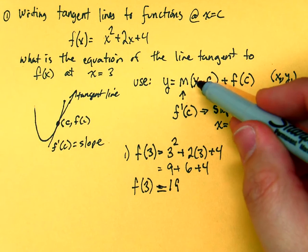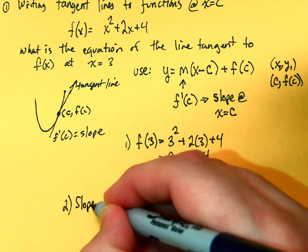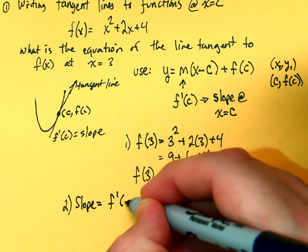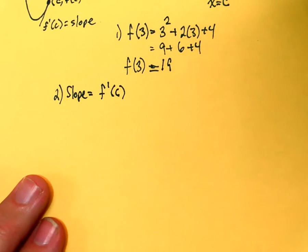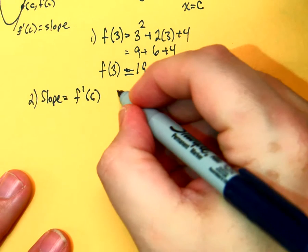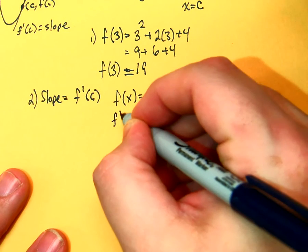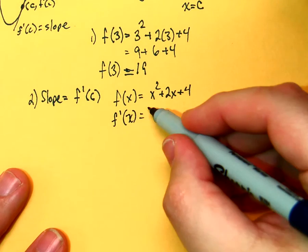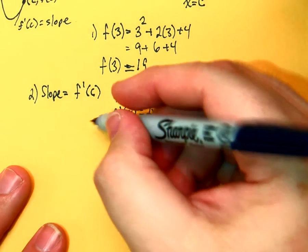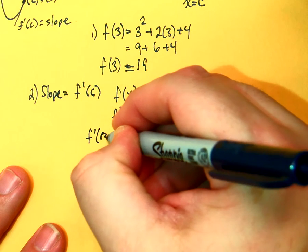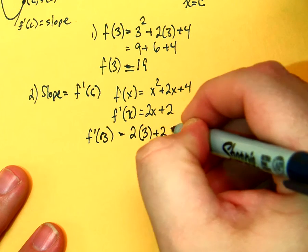Now, I need to figure out my slope. So, the slope is equal to f prime. So, if f of x is equal to x squared plus 2x plus 4, what's f prime of x? So, now, I need f prime at 3, which would be 2 times 3 plus 2, which is 8.